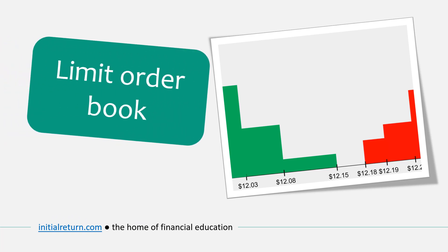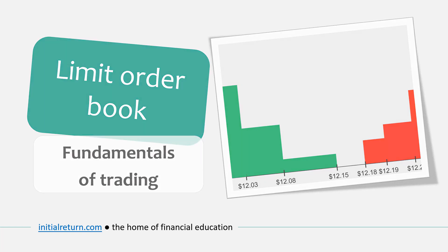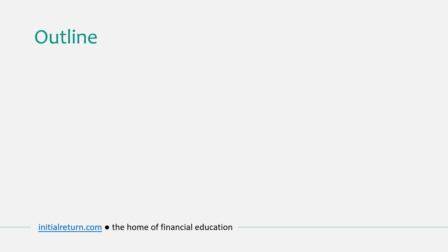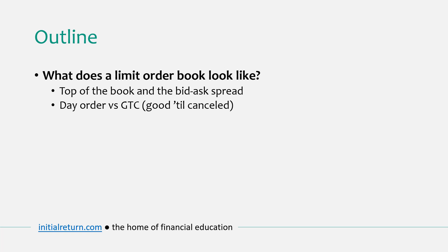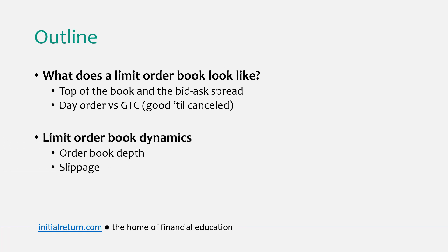Today's topic is the limit order book, part of our course on fundamentals of trading. Here is the outline for today's video. First we will ask what does a limit order book look like, specifically discussing terms such as the top of the book, bid-ask spread, day order, and good-till-cancelled. There are timestamps in the video description if you'd like to jump ahead.